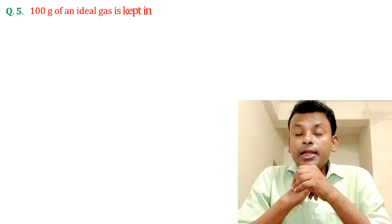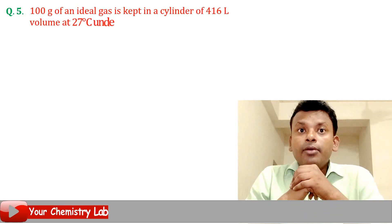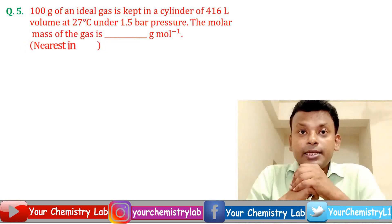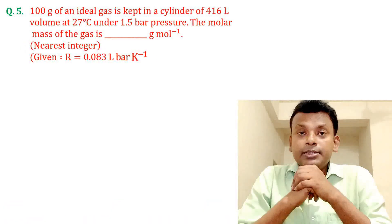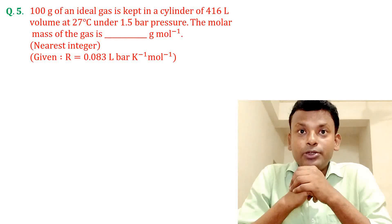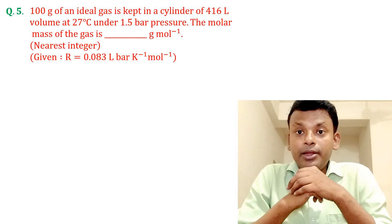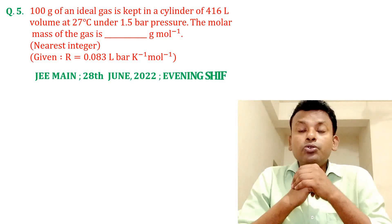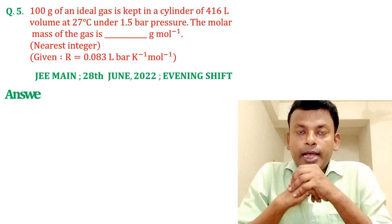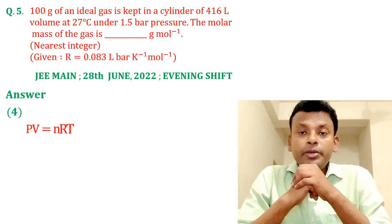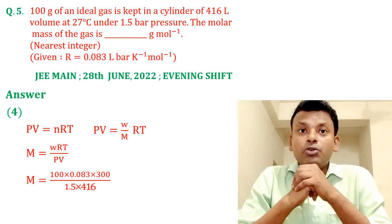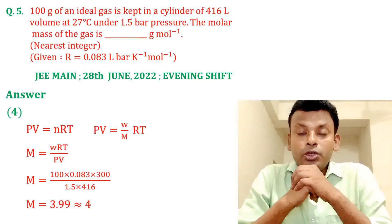Question 5. 100 grams of an ideal gas is kept in a cylinder of 416 liter volume at 27 degrees centigrade under 1.5 bar pressure. The molar mass of the gas is dash grams per mole. This question was set in JEMN 28th June 2022 evening shift. Answer is 4. Using PV = nRT = (W/M)RT, so M = WRT/PV. Putting in all values, molar mass equals 3.99, so the approximate answer is 4.